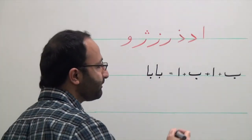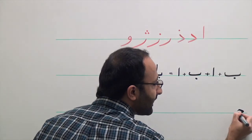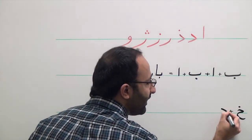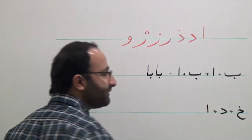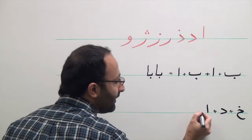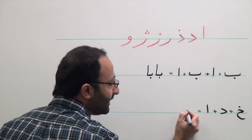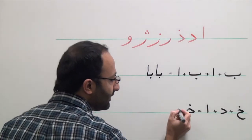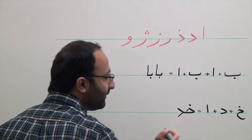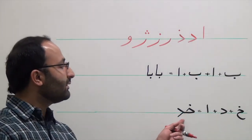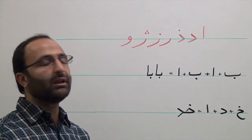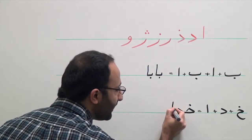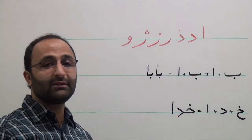Another example: you have Kh, and you have Dal, and you have Aleph. First we should use the initial form of Kh, then we connect Dal to Kh. But as Dal is one of those characters that cannot be connected to a following character, Dal cannot be connected to Aleph, and it is written separately.